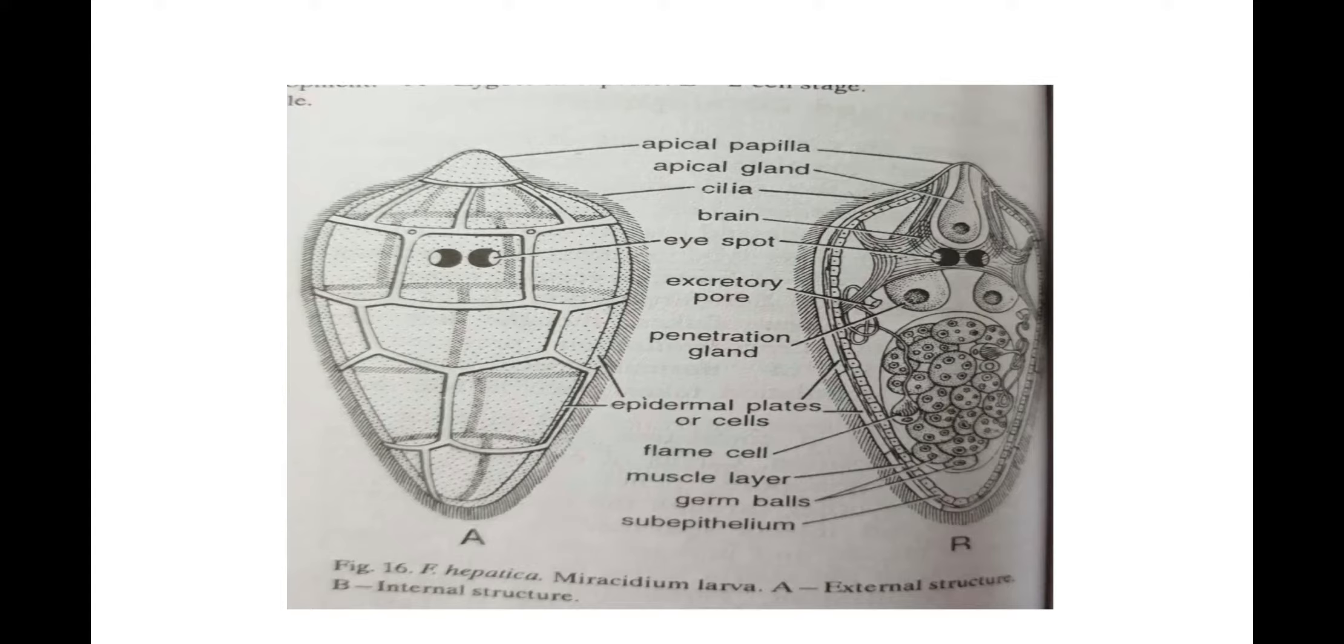Third tire has 3 plates, 1 dorsal and 2 ventral. Fourth tire has 4 plates, 2 right and 2 left. Fifth tire has 2 plates, 1 left and 1 right. Beneath epidermal plates is a fine layer of sub-epidermal musculature, consisting of outer circular and inner longitudinal fibers. Below muscles is a layer of cells forming the sub-epithelium. Epidermal plates, sub-epidermal musculature and sub-epithelium together form the body wall of Miracidium.